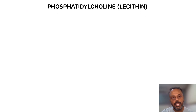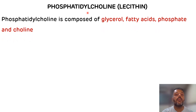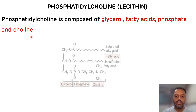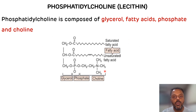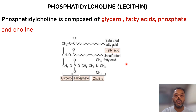First, phosphatidylcholine. This phosphatidylcholine is also known as lecithin. The composition of phosphatidylcholine includes fatty acid, alcohol in the form of glycerol, phosphate, and choline as a nitrogenous base. You can see in the structure there is a presence of glycerol, phosphate, fatty acid, and choline. This phosphatidylcholine is found in great amounts in liver and brain in animals, and it is also present in egg yolk.